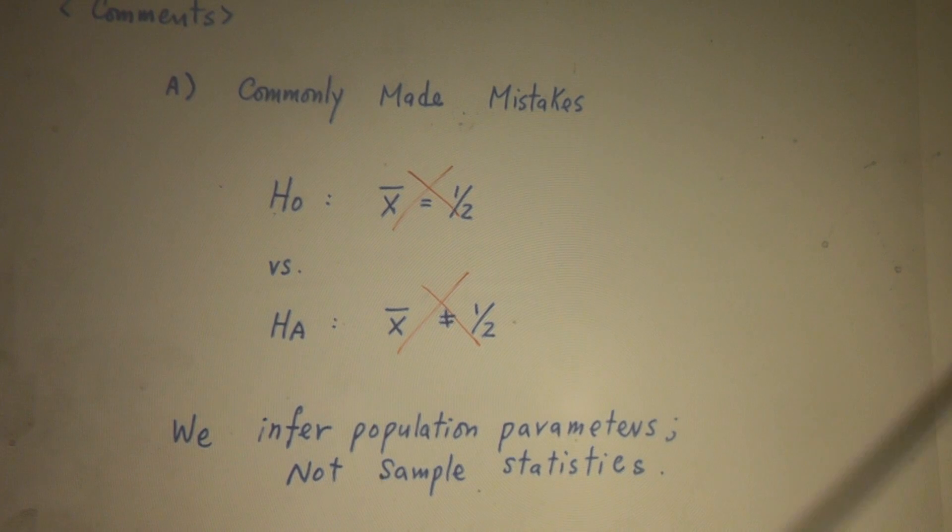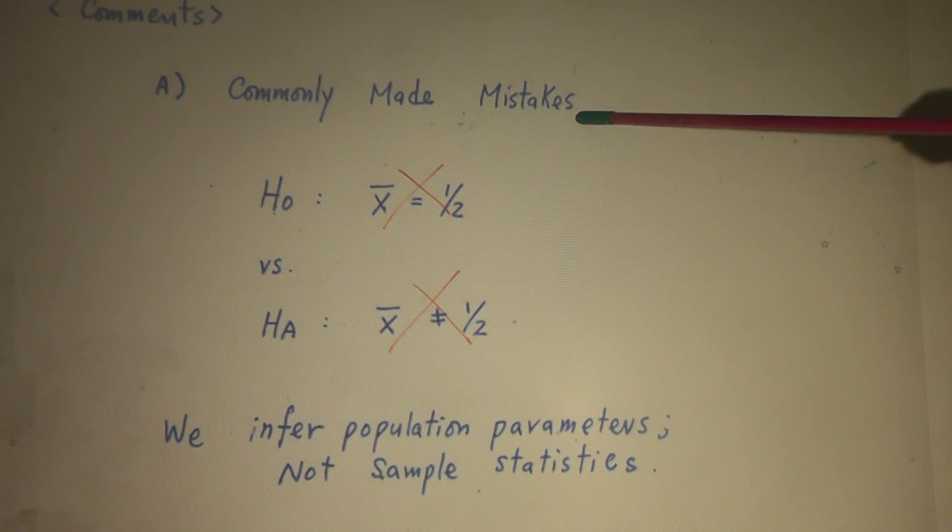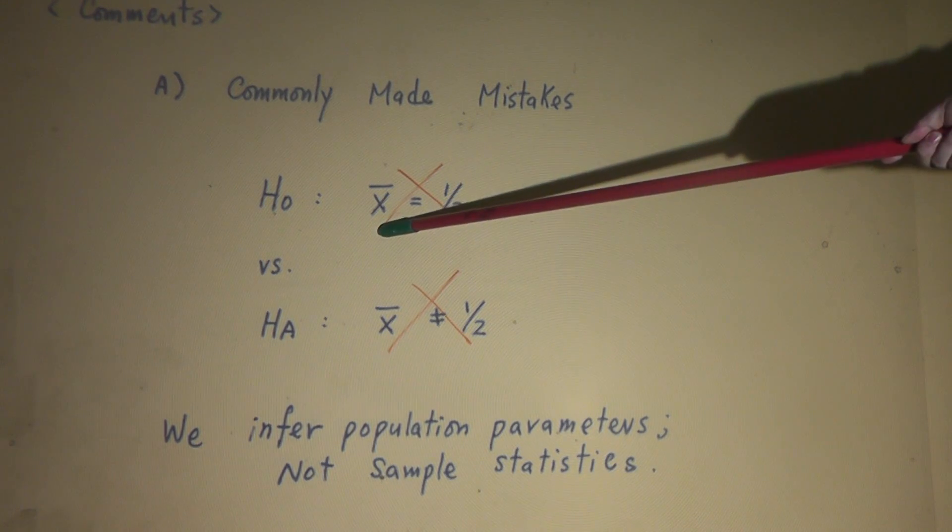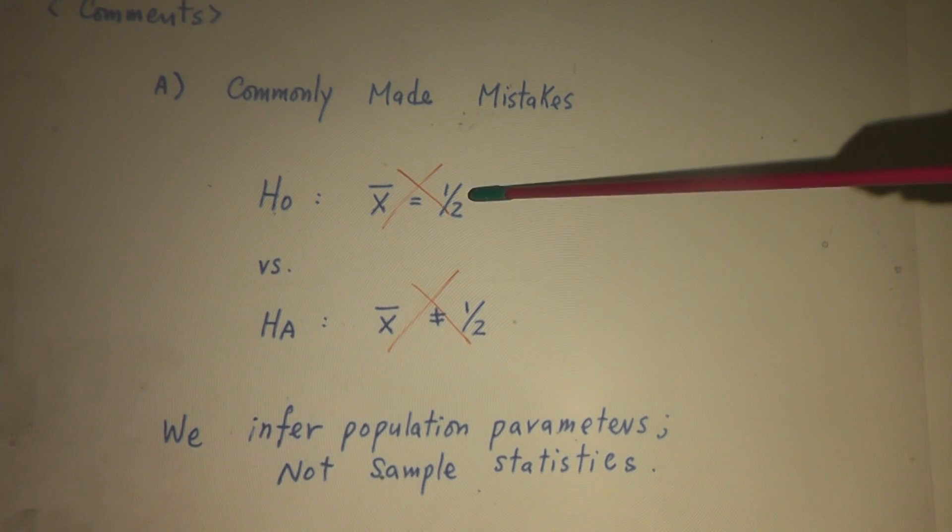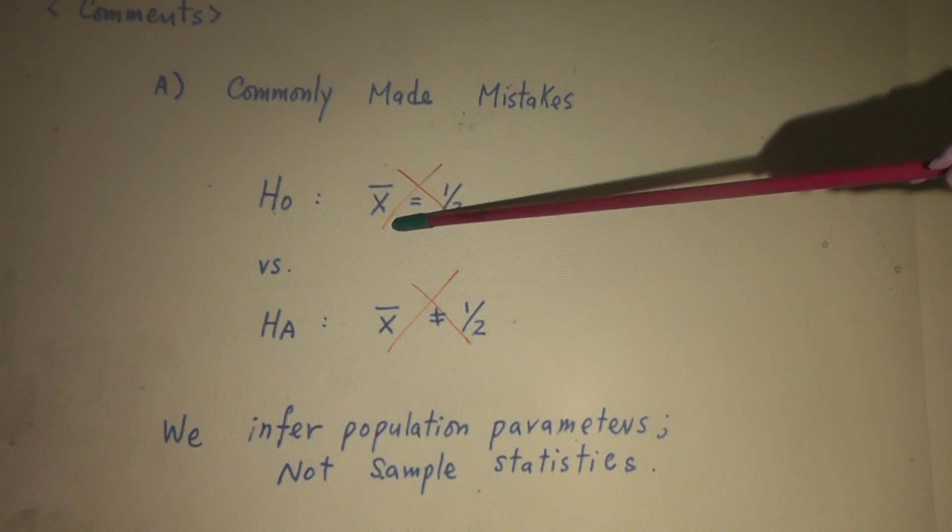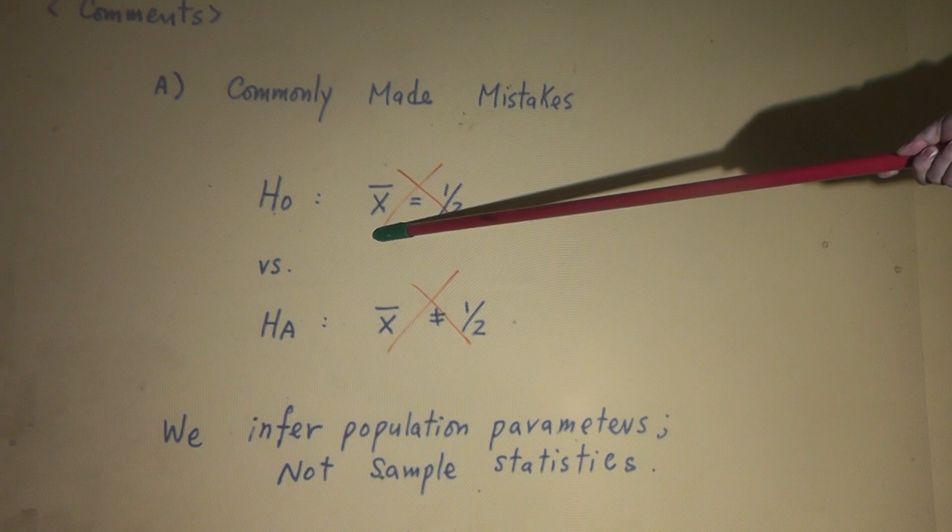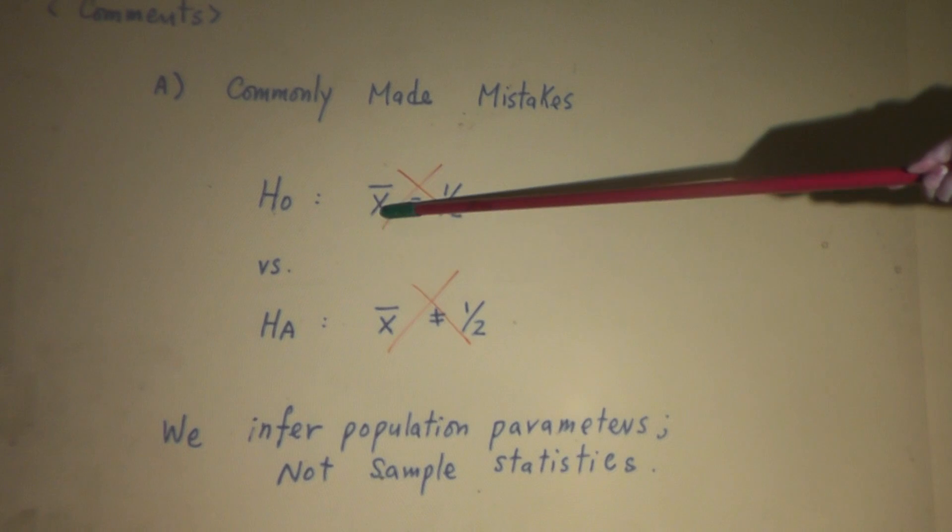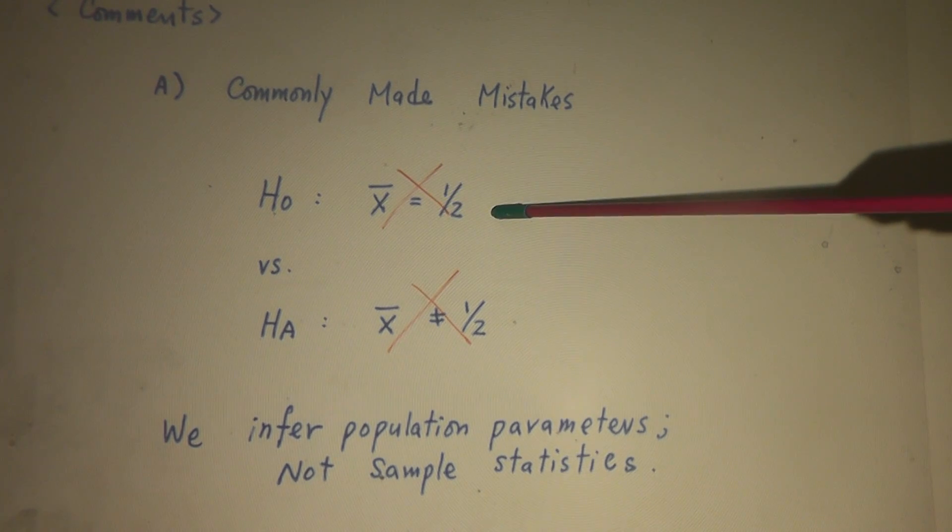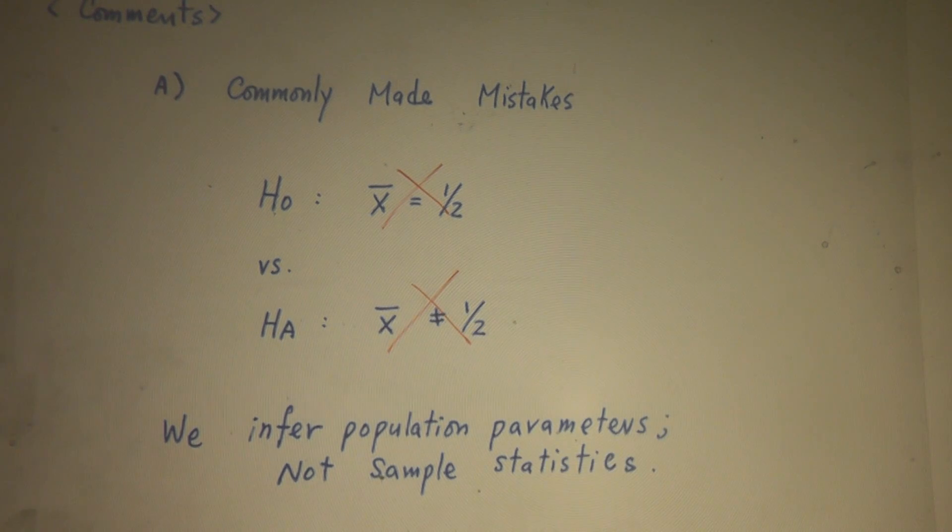Next, comment on step one in approach one. Commonly made mistake. Some students, they don't put π equal to 50%, HA π not equal to 50%. Some students, I found this in the final exam. What kind of mistake they make? Instead of using π, the population parameter, they put sample statistic, X bar. X bar is sample percentage, so it's a statistic. They say they want to test H0: sample percentage is equal to 50%. Against HA, sample percentage is not 50%. And this is totally wrong.